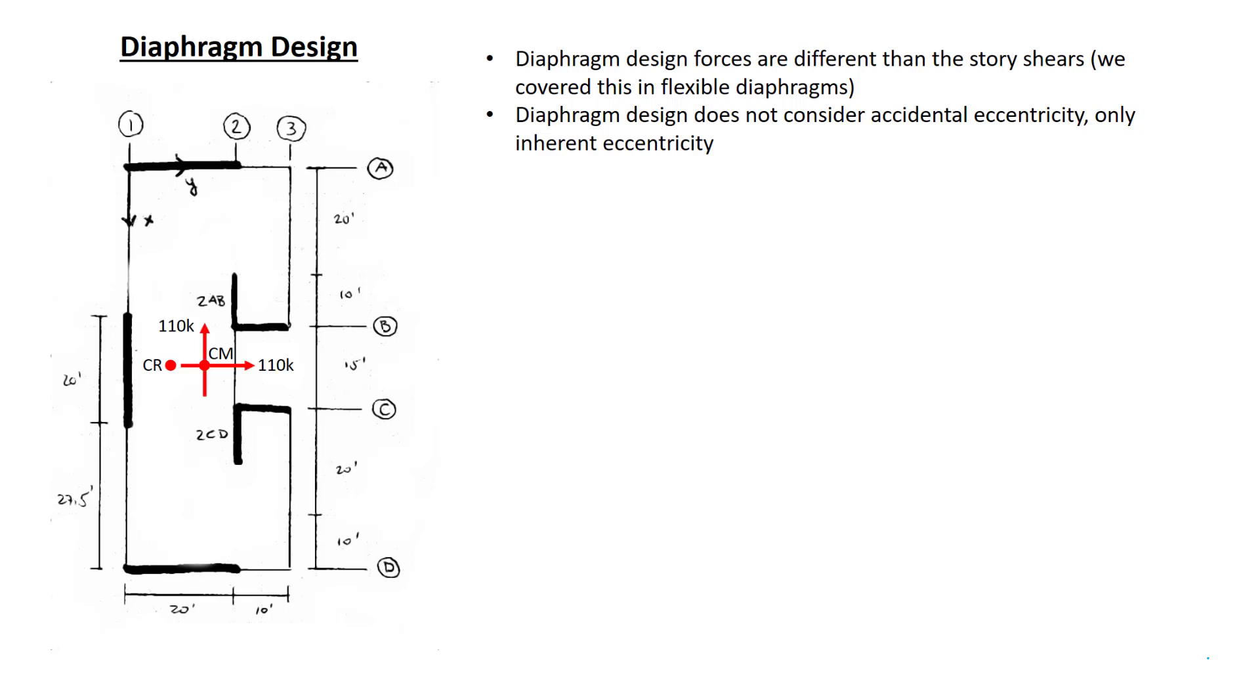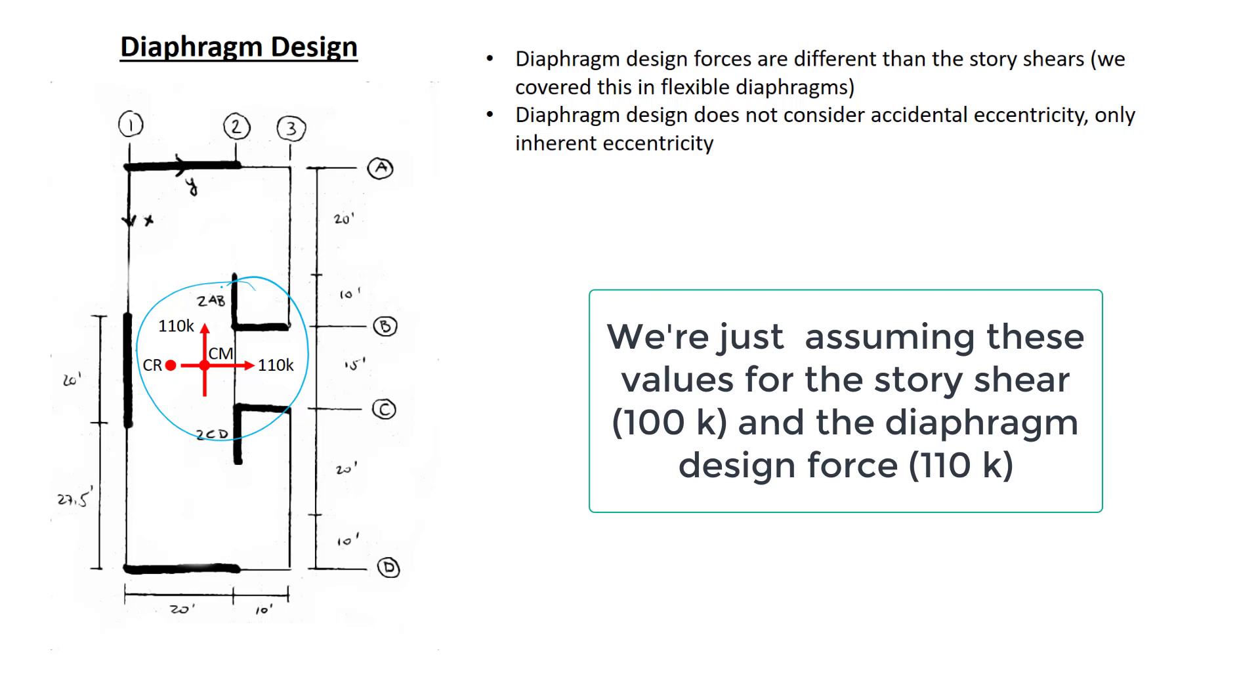Let's look at the forces that we would consider for diaphragm design. These are the forces right down here. You'll notice that we apply them at the center of mass. We're still considering the inherent eccentricity, but we're not considering any displacement from the center of mass, that is, accidental eccentricity. You'll also notice that the value that we're using here is 110 kips. Previously, we were using 100 kips.